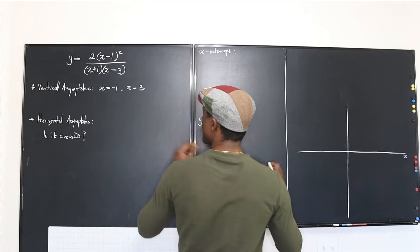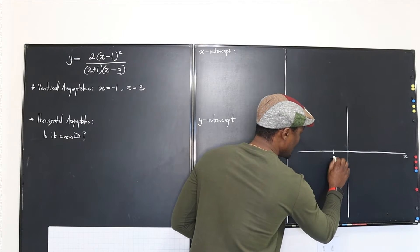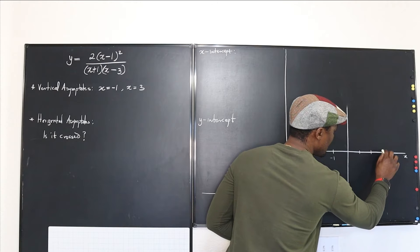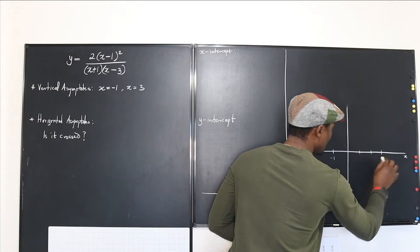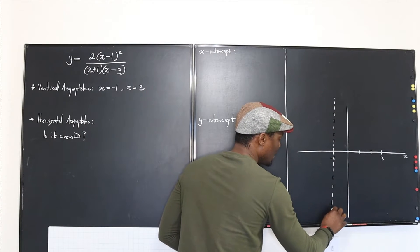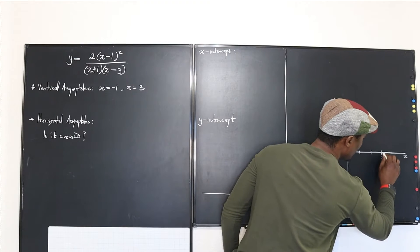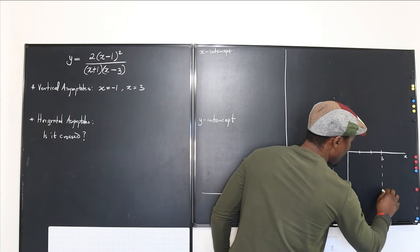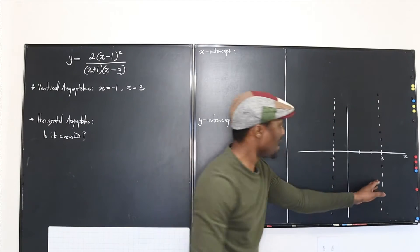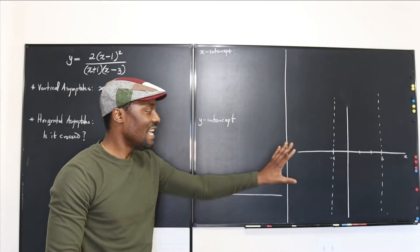So x equals negative one and x equals three are our vertical asymptotes, and they also constitute what you call your critical values. When we sketch our graph, we must avoid those lines completely, because the graph is not defined at those points and cannot go through those two lines.